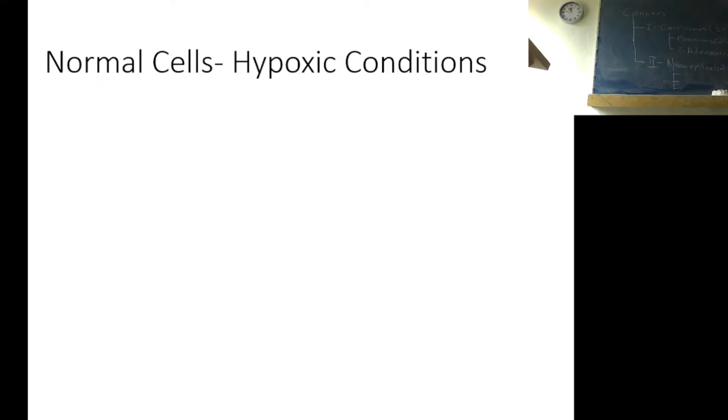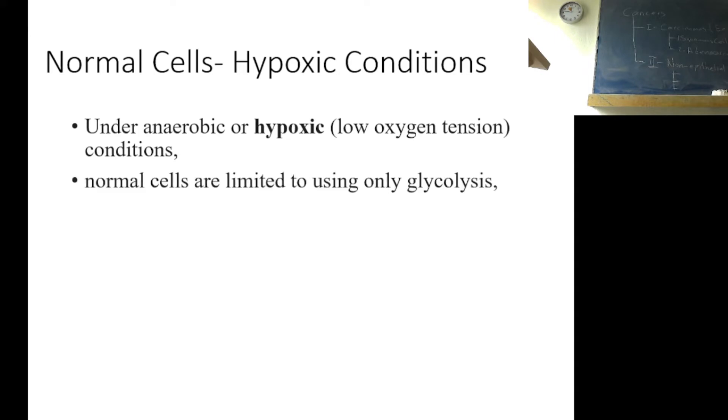Normal cells hypoxic conditions: Under anaerobic or hypoxic low oxygen conditions, normal cells are limited to using only glycolysis. Generate pyruvate. Pyruvate is reduced to lactate and lactate is secreted from the cell. Cancer cells: Many types of cancer cells rely largely on glycolysis, generating lactate even when exposed to ample oxygen.